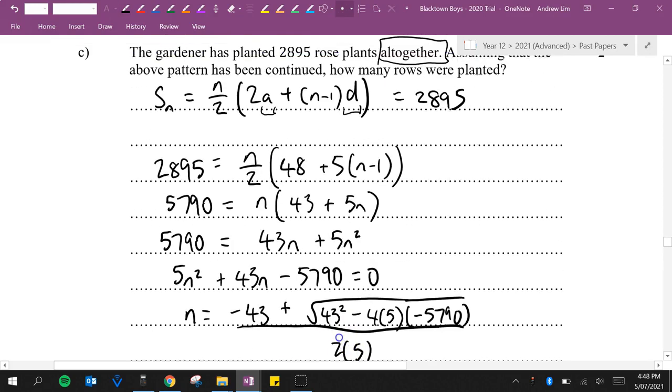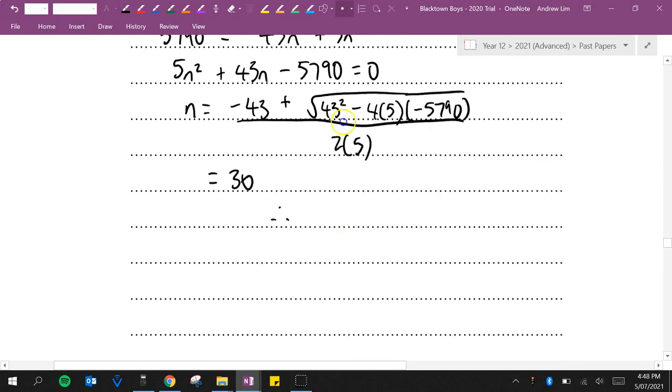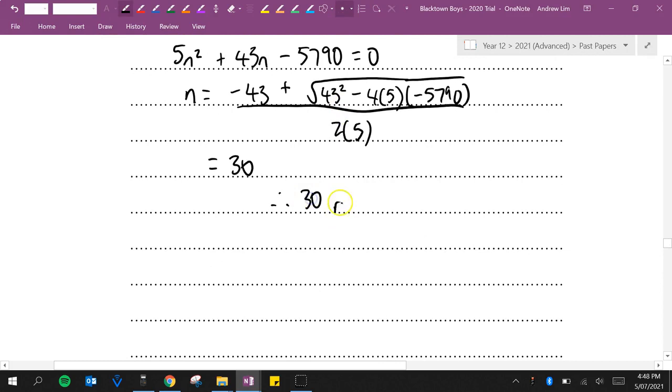Therefore, it has to be the 30th row. 30 rows were planted.